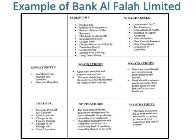In the example of Bankal Falla Limited, you can see strengths, weaknesses, opportunities, and threats — the four quadrants of SWOT Analysis — while SO Strategies, WO Strategies, ST Strategies, and WT Strategies are the four quadrants of TOES Analysis. In this example, both analyses are merged to make TOES Analysis or TOES Matrix. You can also make both analyses separately using their respective required matrices. The formats of SWOT Analysis and TOES Analysis are given in the title page of this video.